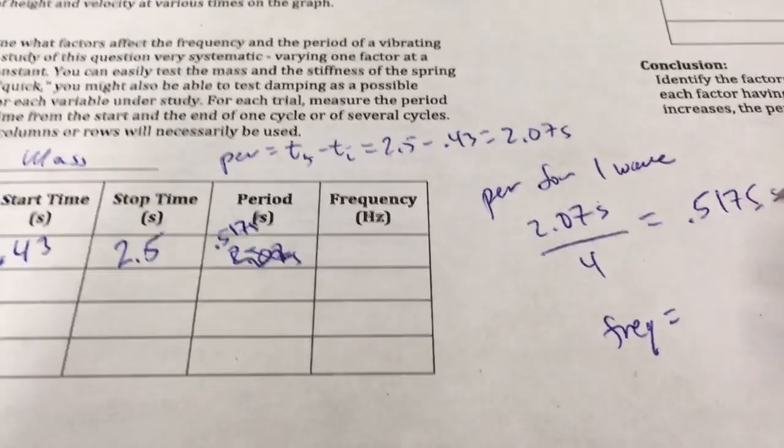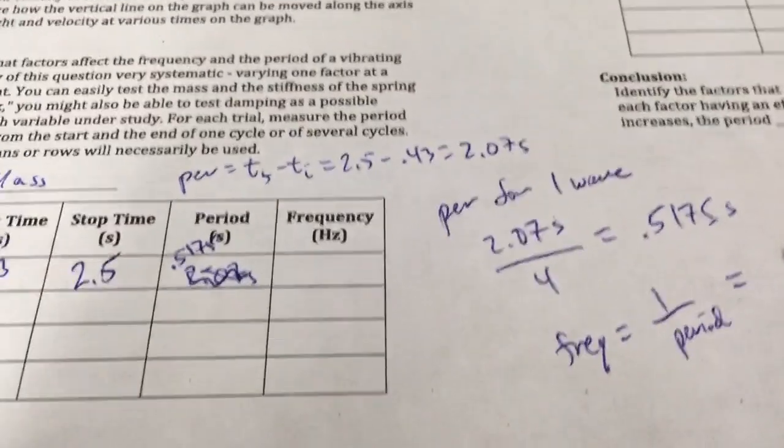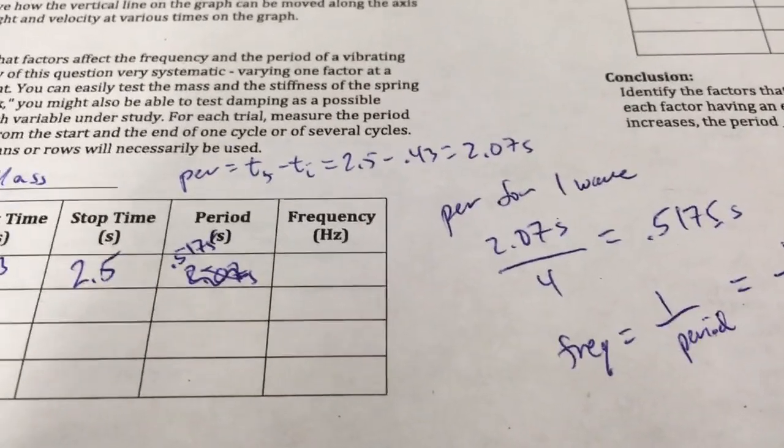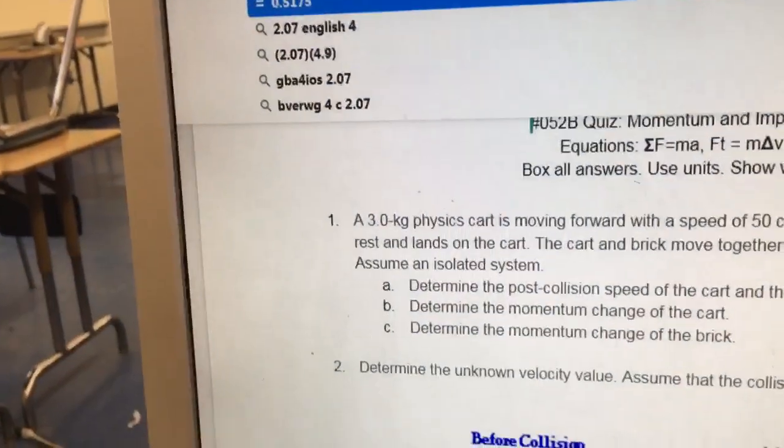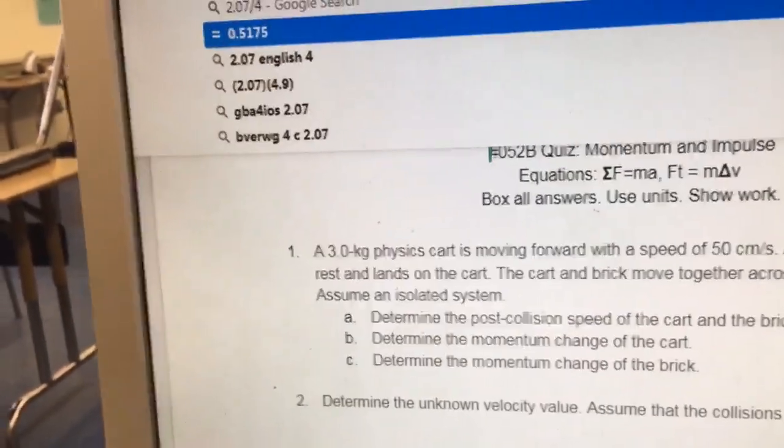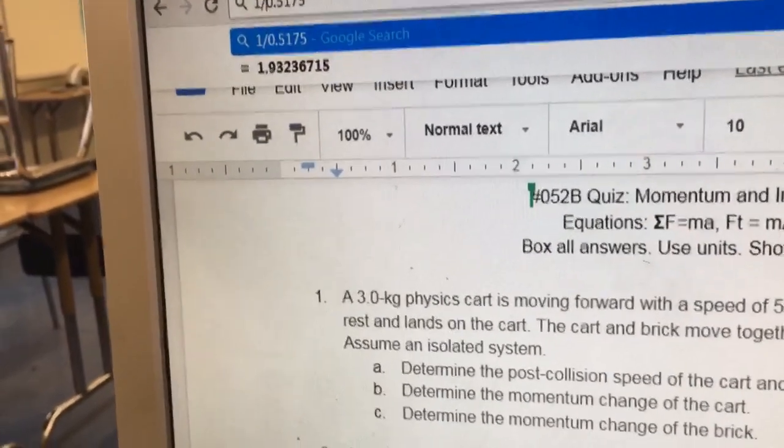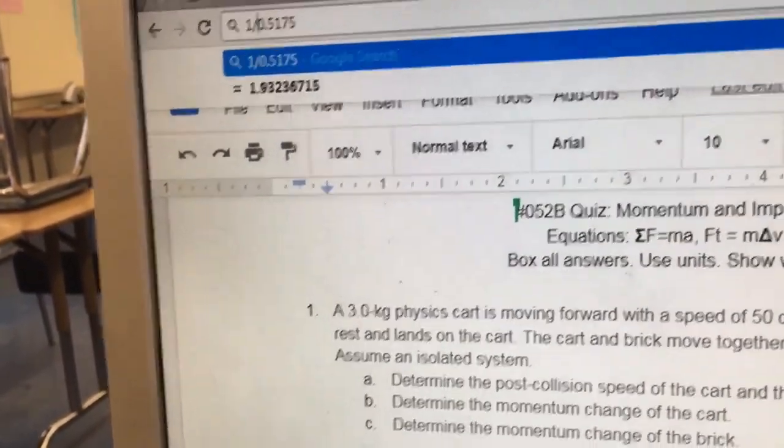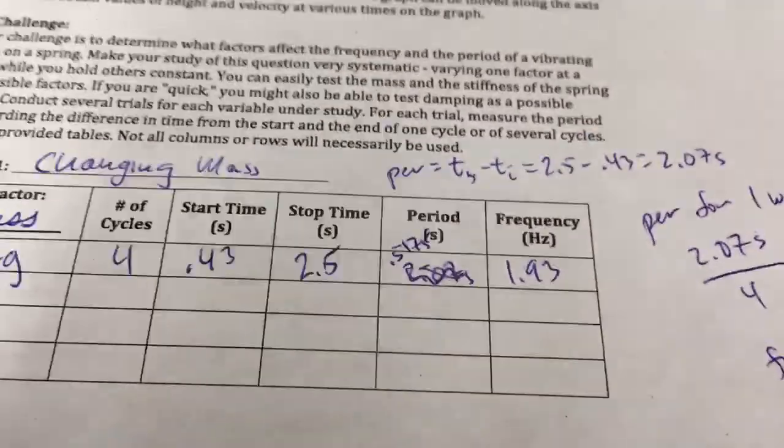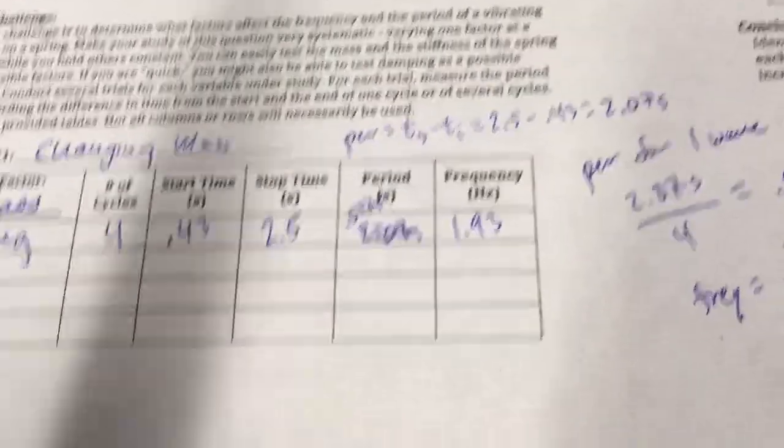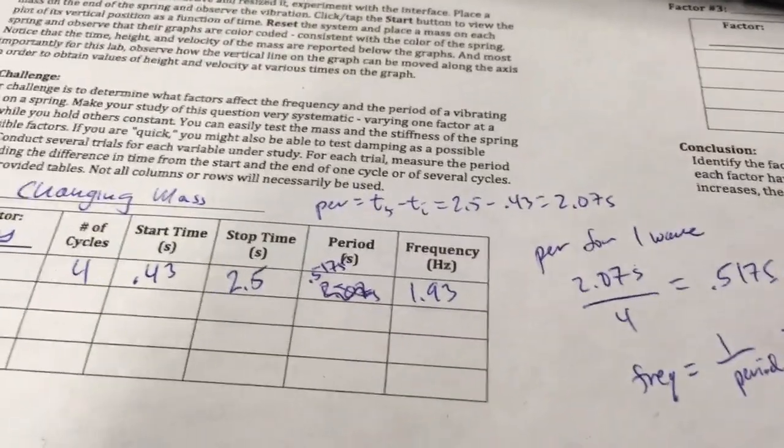Or in this case, 1 divided by 0.5175. And so I can calculate that. 1 divided by, there we go. And like I said, it's about 2, 1.93. That's the frequency. So what that says is that, what that number means is that in 1 second, 1.93 waves are going to go by.